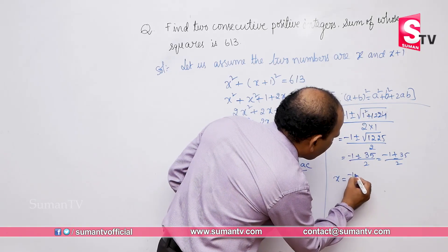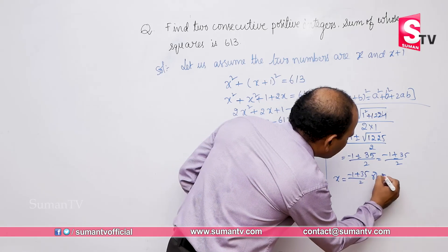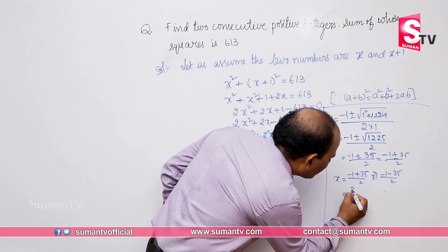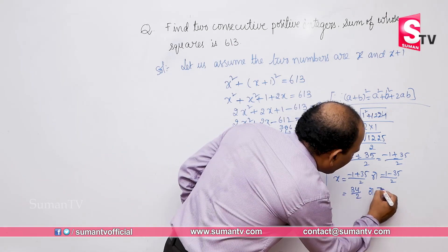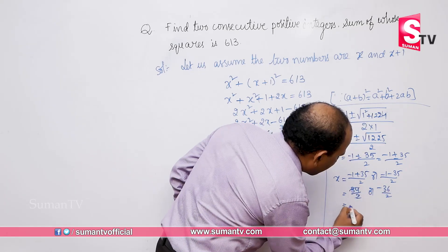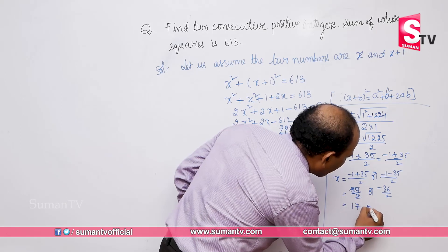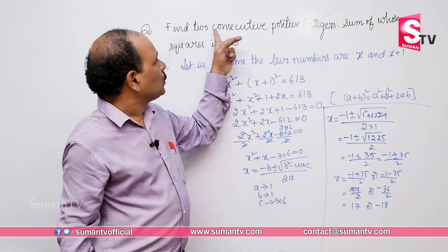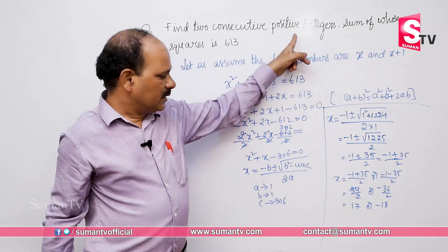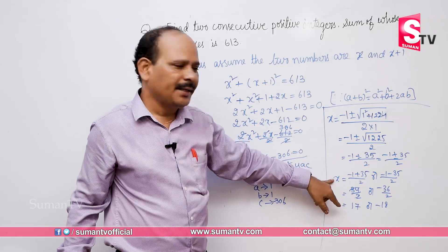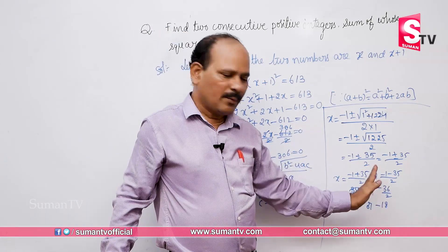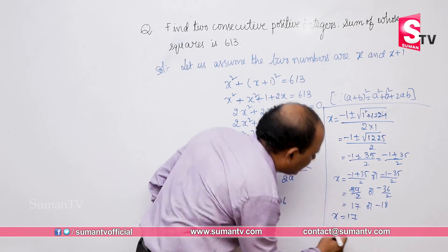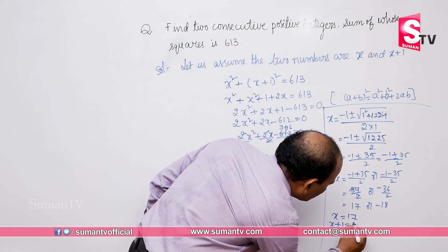So X equals minus 1 plus or minus 35 over 2. Taking the plus symbol: minus 1 plus 35 equals 34, so 34 divided by 2 is 17. Taking the minus symbol: minus 1 minus 35 equals minus 36, so minus 36 divided by 2 is minus 18. Since the question asks for positive numbers, I am removing minus 18 and taking X as 17.